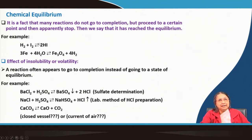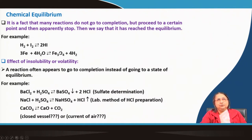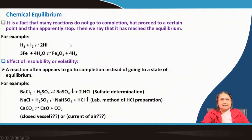That means the rate of the forward reaction and the rate of the backward reaction are the same. Reaction is still going on, but the amount of HI produced from hydrogen and iodine equals the amount of HI decomposed back to reactants — that is the equilibrium state. Similarly, iron when reacting with steam produces hydrogen gas and iron oxide Fe₃O₄; this is an equilibrium reaction.